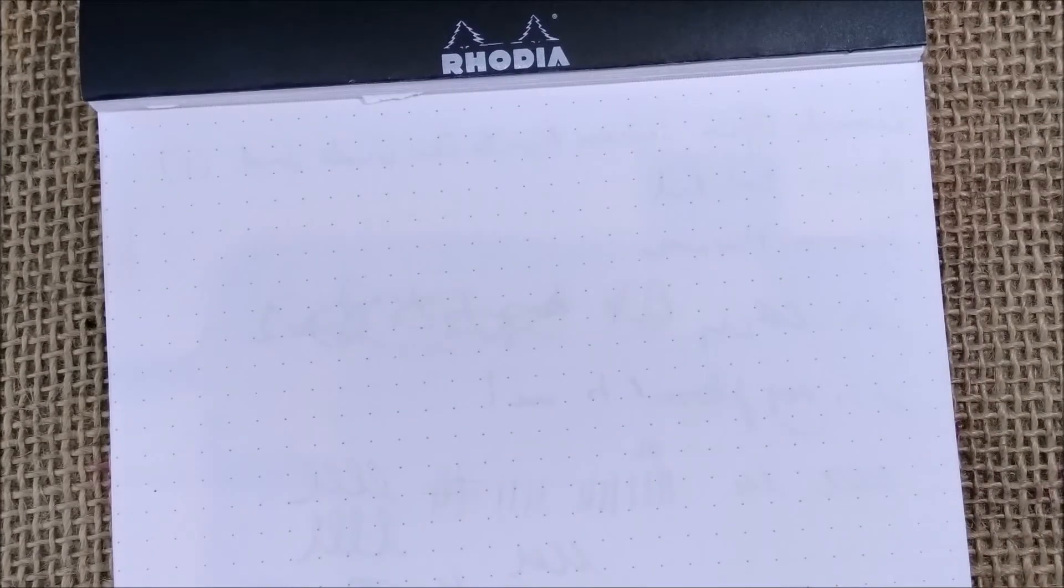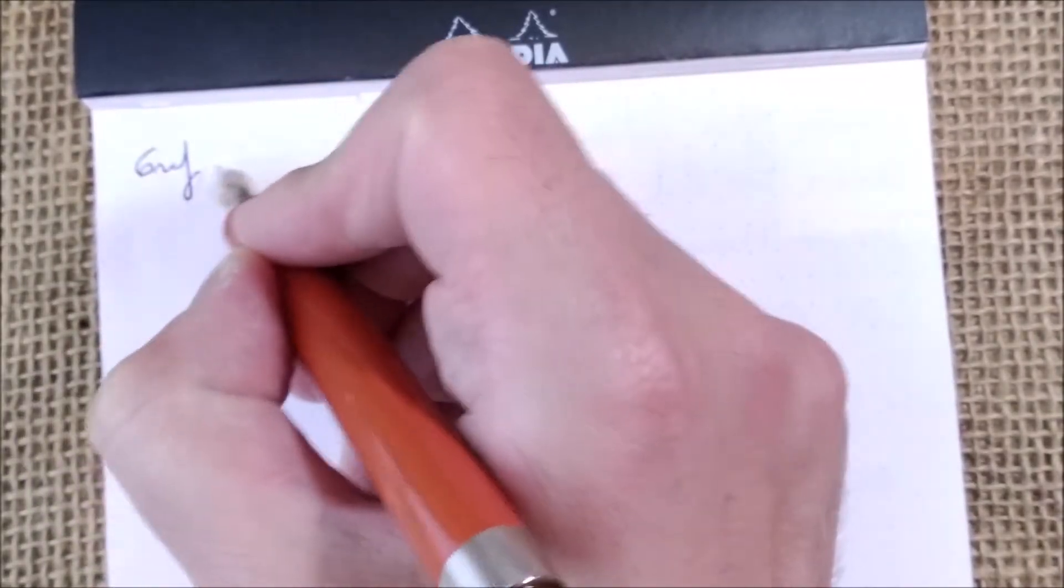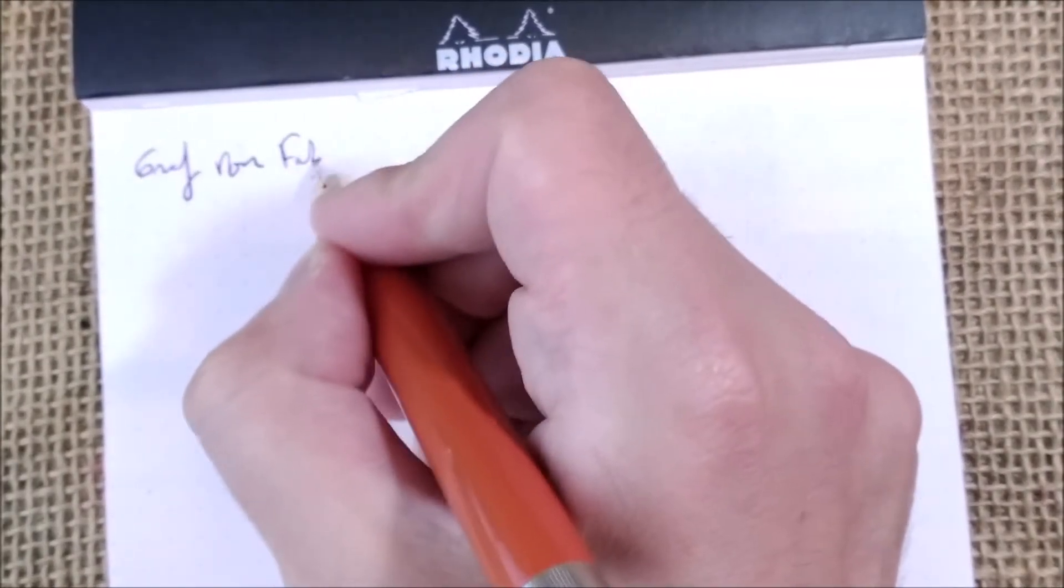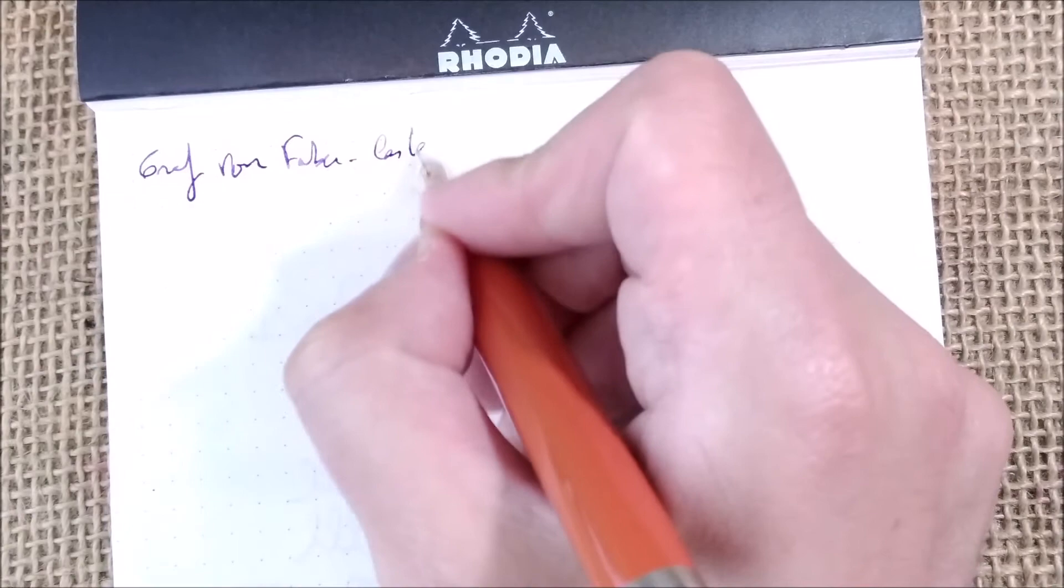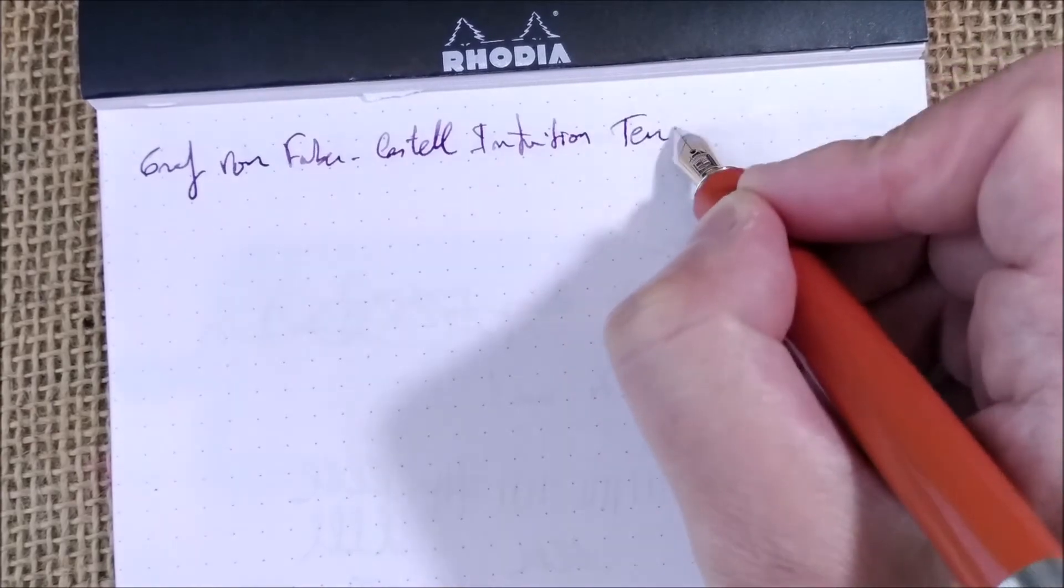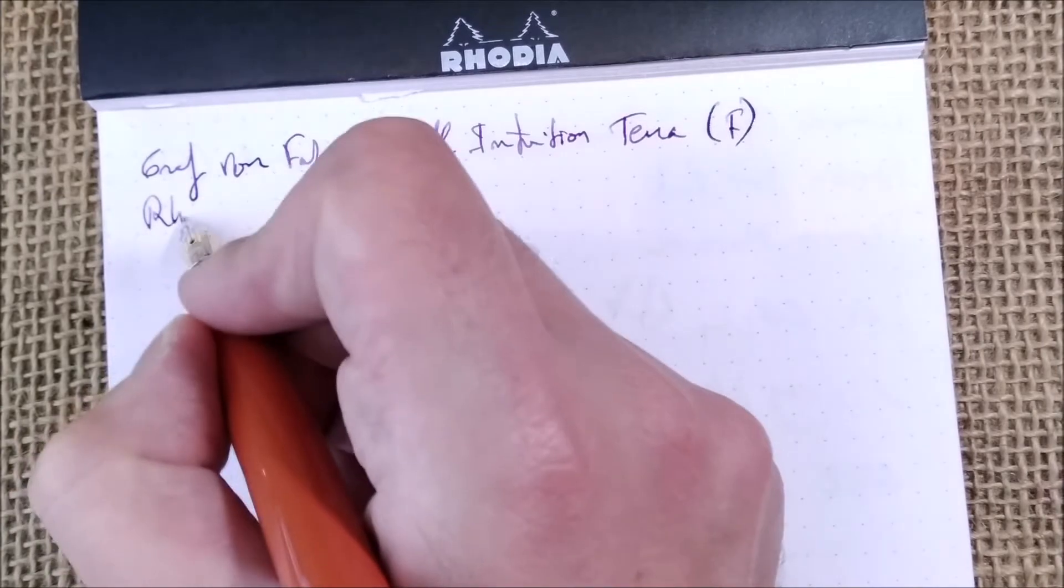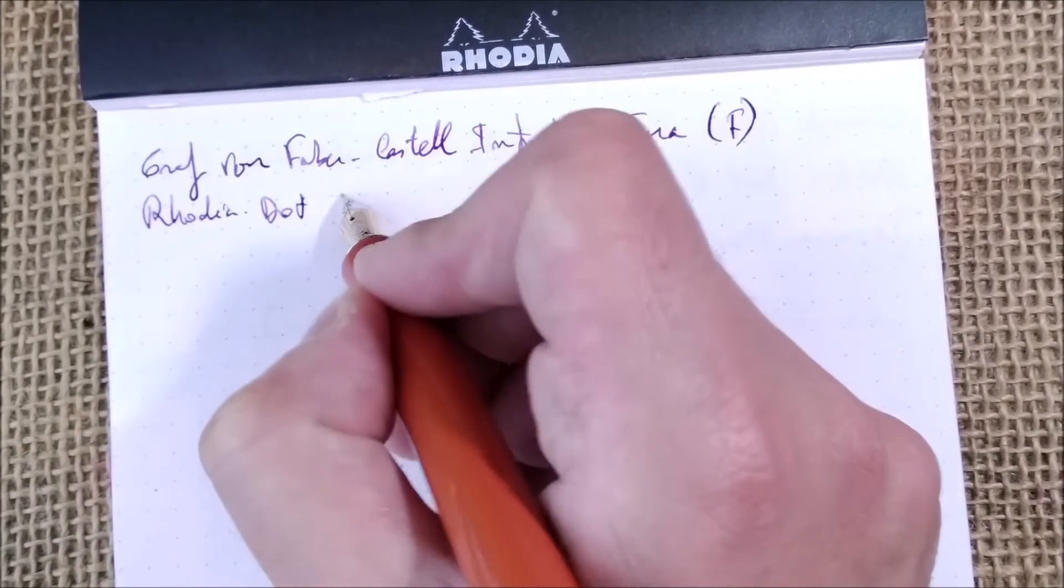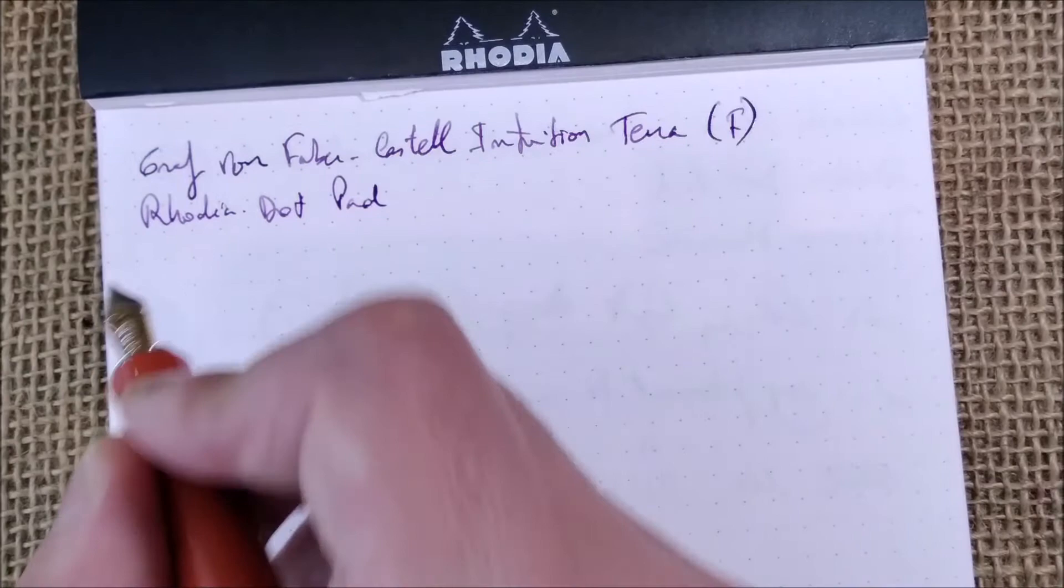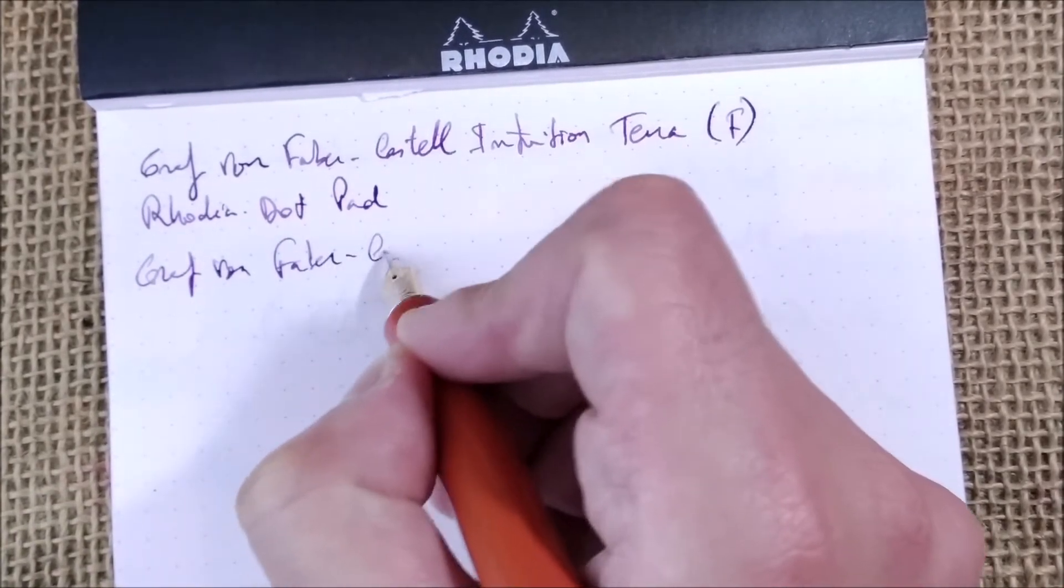Now let's go to the writing sample and here we have the pen and paper. Let's take a look at how it writes. So this is the Graf von Faber-Castell Intuition. The paper is the usual Rhodia dot pad and the ink is the Graf von Faber-Castell.